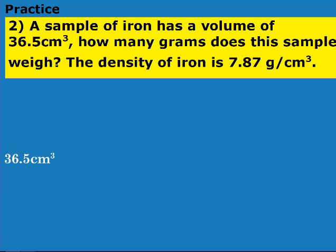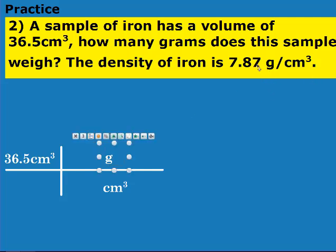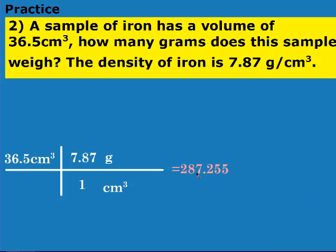You should have started with 36.5 centimeters cubed. Centimeters cubed goes on the bottom, and I can go from centimeters cubed to grams through density. I have 7.87 with grams and nothing with centimeters cubed, so I can just leave that blank or put a 1 there. My question says how many grams, so I'm done — I just need to multiply that out. For sig figs, I'm going to look at my volume, not the density, since density is a constant. So we have 3 sig figs, and that 7 is going to stay a 7. Our final answer is 287 grams.